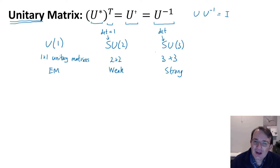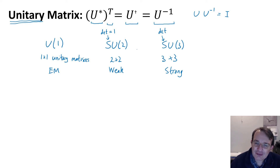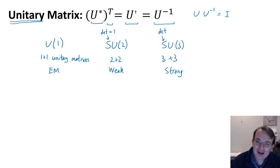Then the last one we're going to see is SU(3) — again, special means determinant one, unitary means complex conjugate transpose is the inverse — and this is now 3×3 matrices. This group represents the symmetry of the strong force.